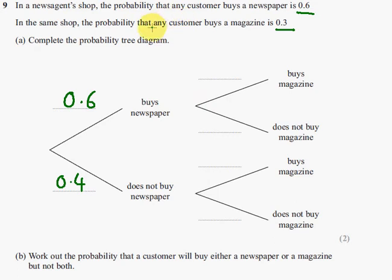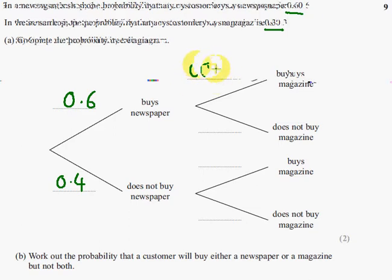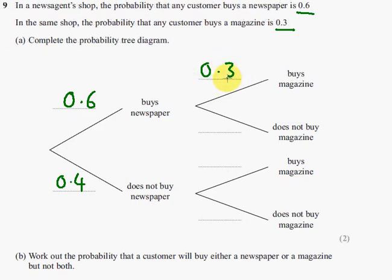It also tells us that any customer buying a magazine, the probability is 0.3. So, 1 takeaway 0.3 leaves us with 0.7. And this is 0.3 to 0.7.